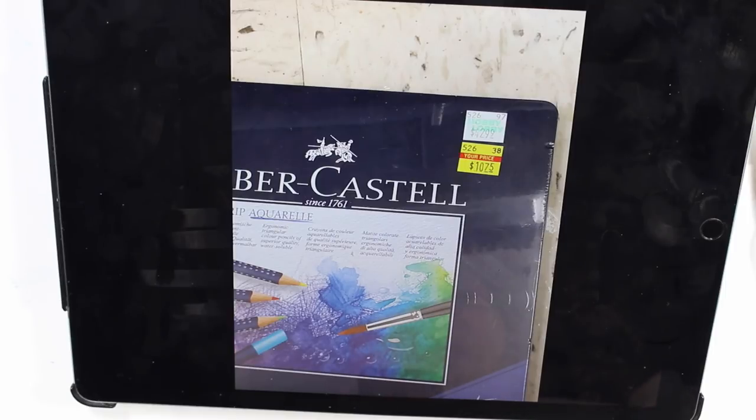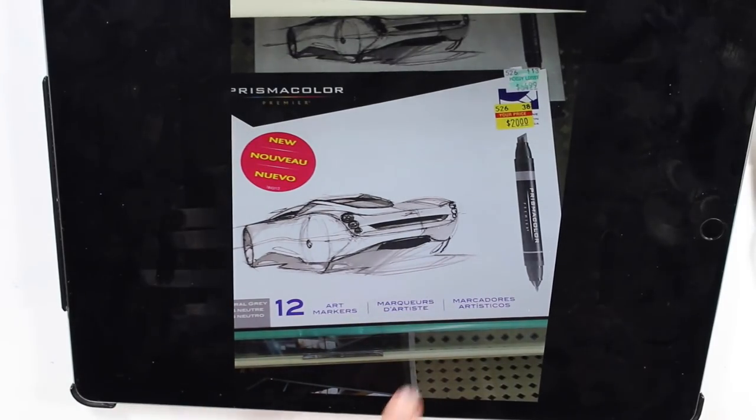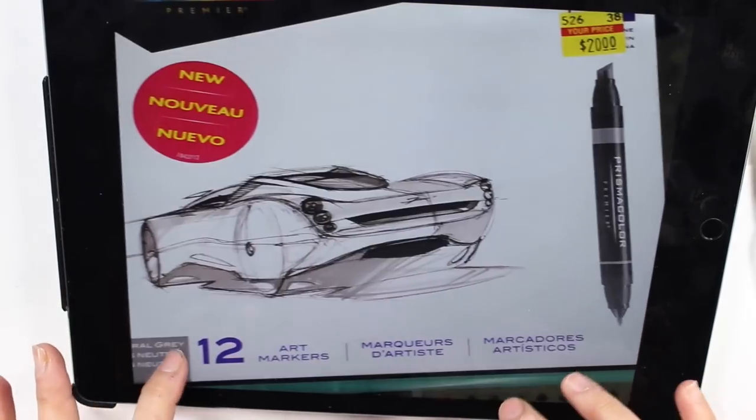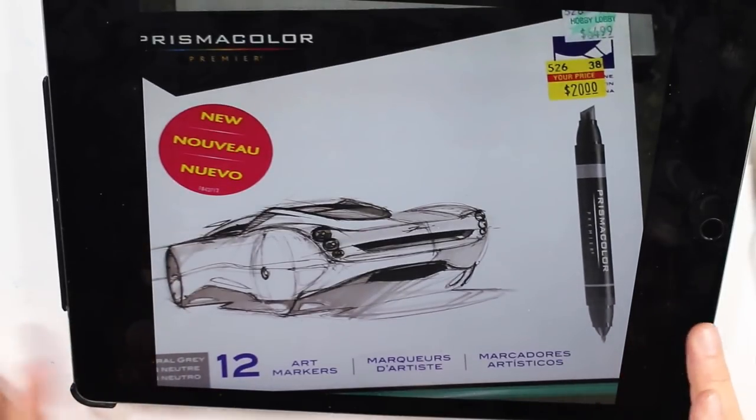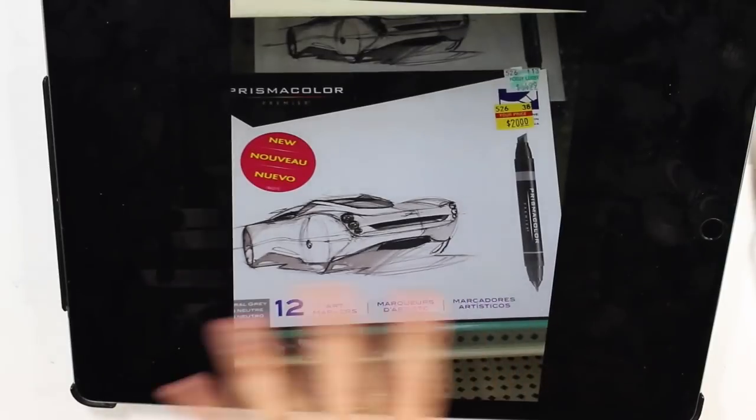These were $43 on sale for $10.75. And then their Prismacolor markers were regularly $65 on sale for $20. And that's for a 12 set. And like I said, all their Prismacolor stuff is on sale.